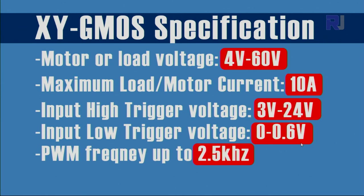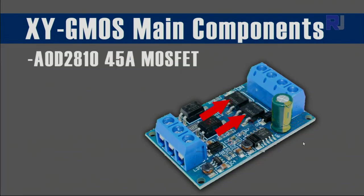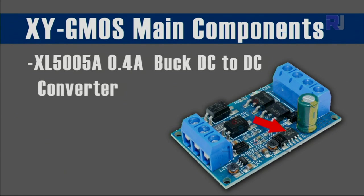The pulse width modulation frequency can be up to 2.5 kilohertz. Here are the main components for this module: we have AOD2810, 45 ampere MOSFET, two of those. The second component is XL5005A, this is 0.4 ampere buck DC-to-DC converter. This is used to facilitate for different voltages that arise here so it can accept wide input voltage.